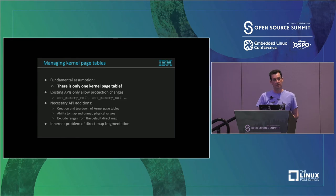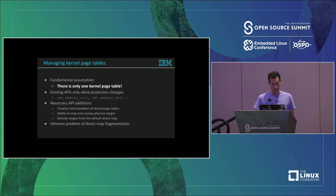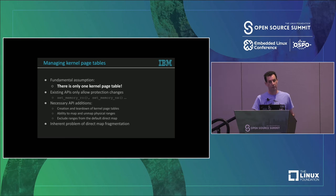The APIs that allow modification of kernel mappings and the direct map were initially designed for debugging. They are not as robust as the APIs that deal with user page tables. To provide the facilities required for restricted kernel address spaces, we need new APIs that will be able to create and iterate kernel page tables efficiently. We need APIs that will allow populating non-default kernel page tables — for instance, ranges excluded in one kernel page table can be visible in another page table.